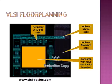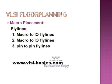The next step in floor planning is macro placement. Macro placement is done manually based on connectivity with other macros and IO pads. Fly lines are used for placing macros manually. Fly lines are virtual connections between macros and also between macros and IO pads. They help the designer understand logical connections and reduce routing resources. Fly lines are divided into three types: macro-to-macro fly lines, macro-to-IO fly lines, and pin-to-pin fly lines.